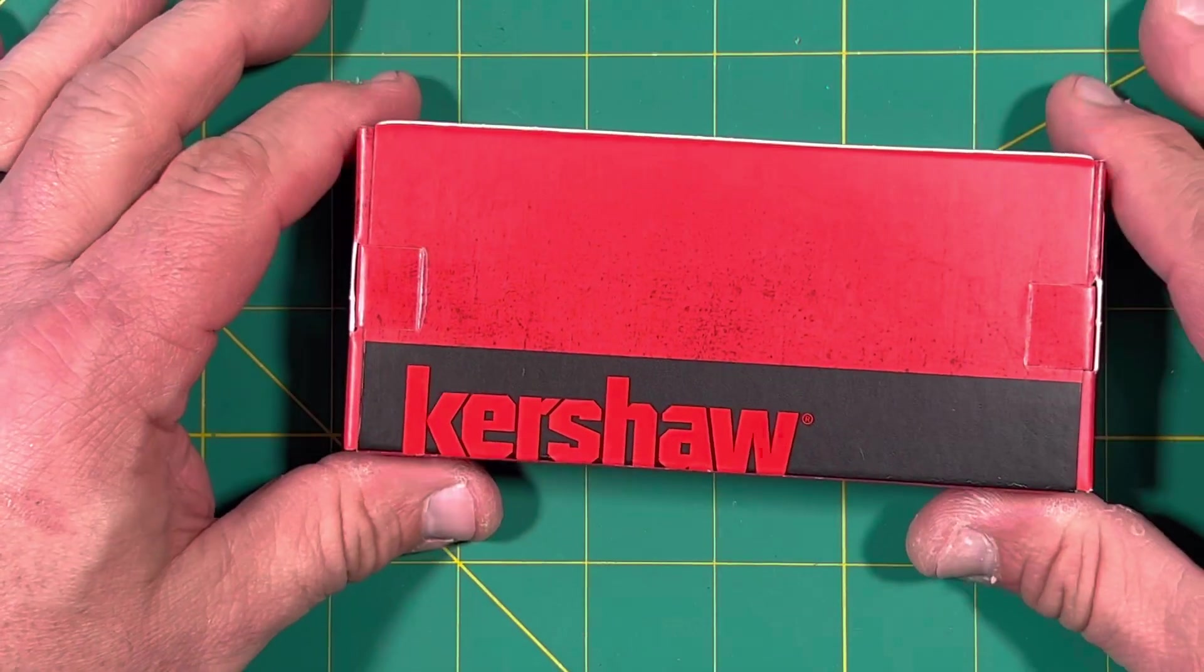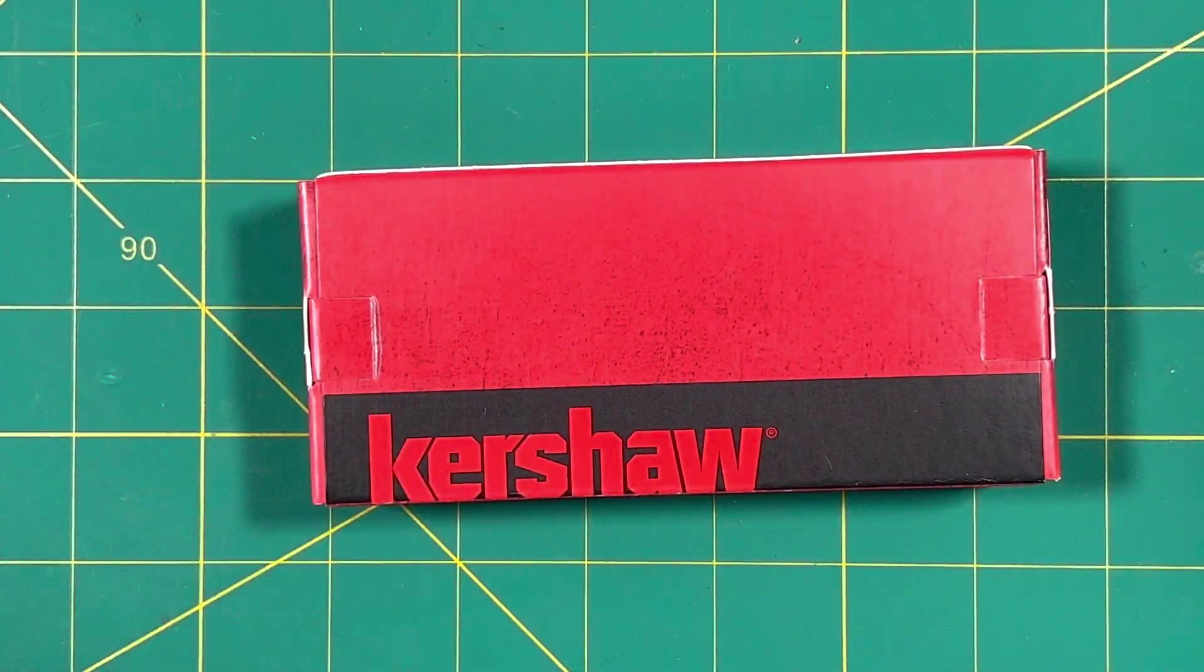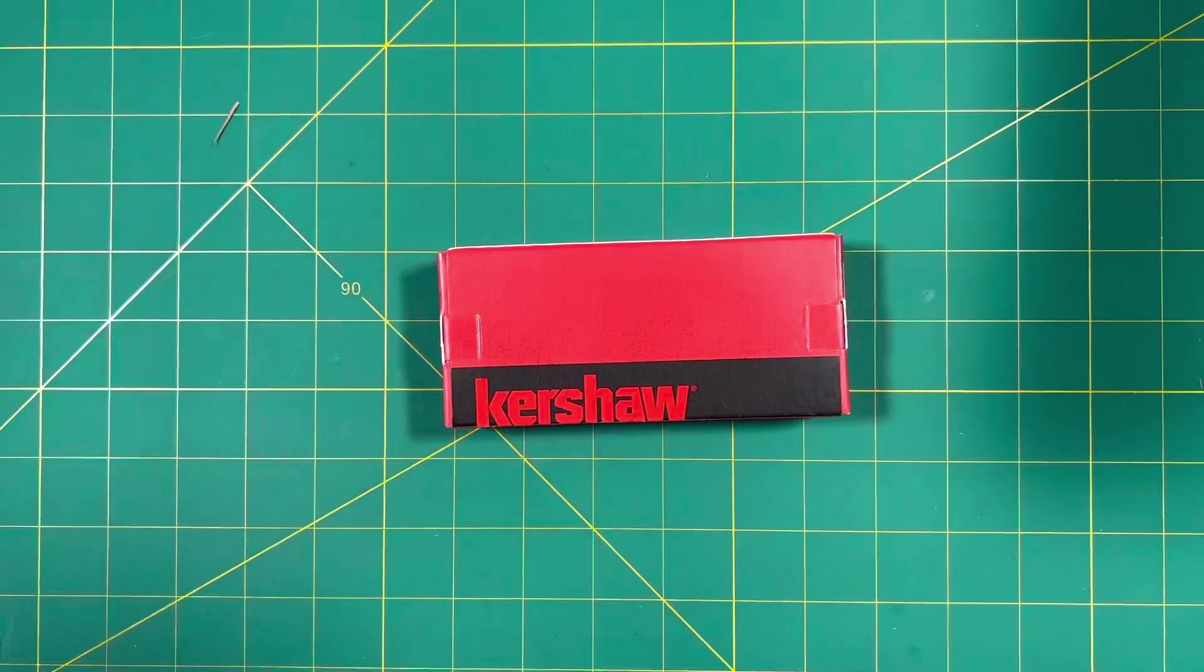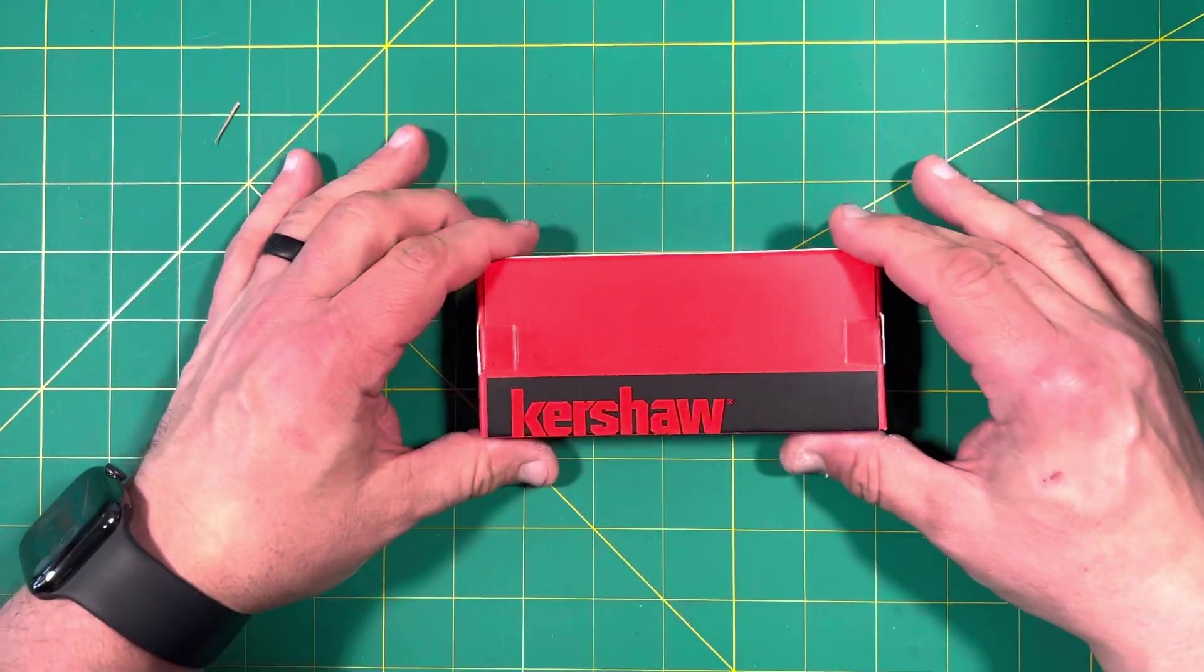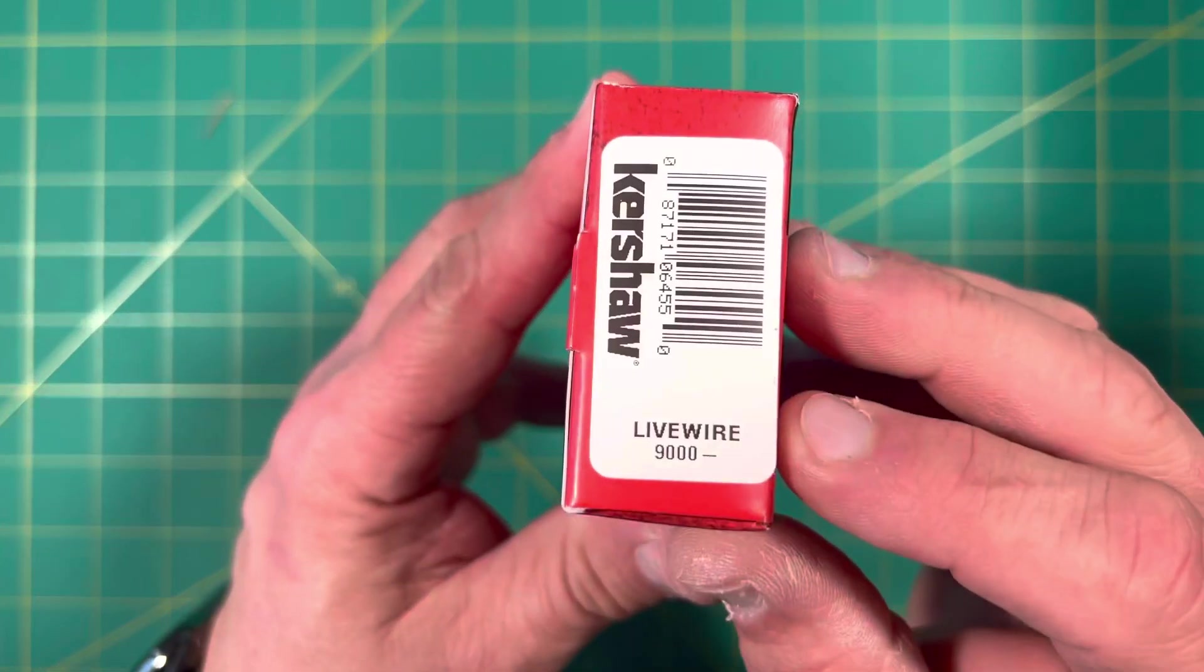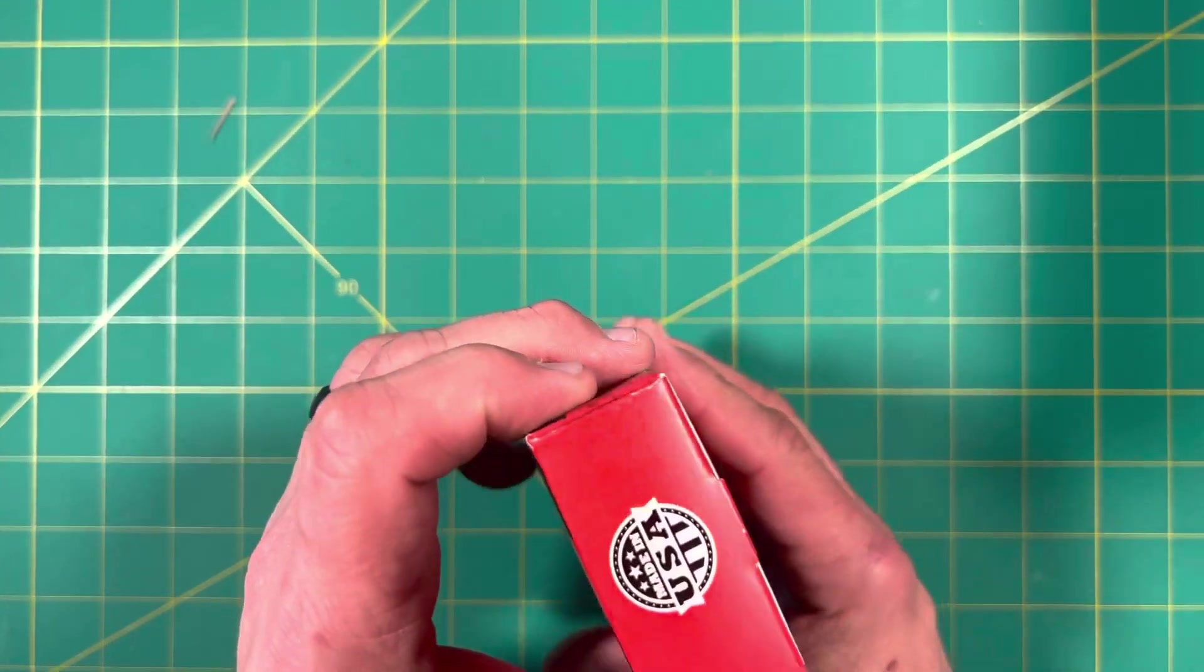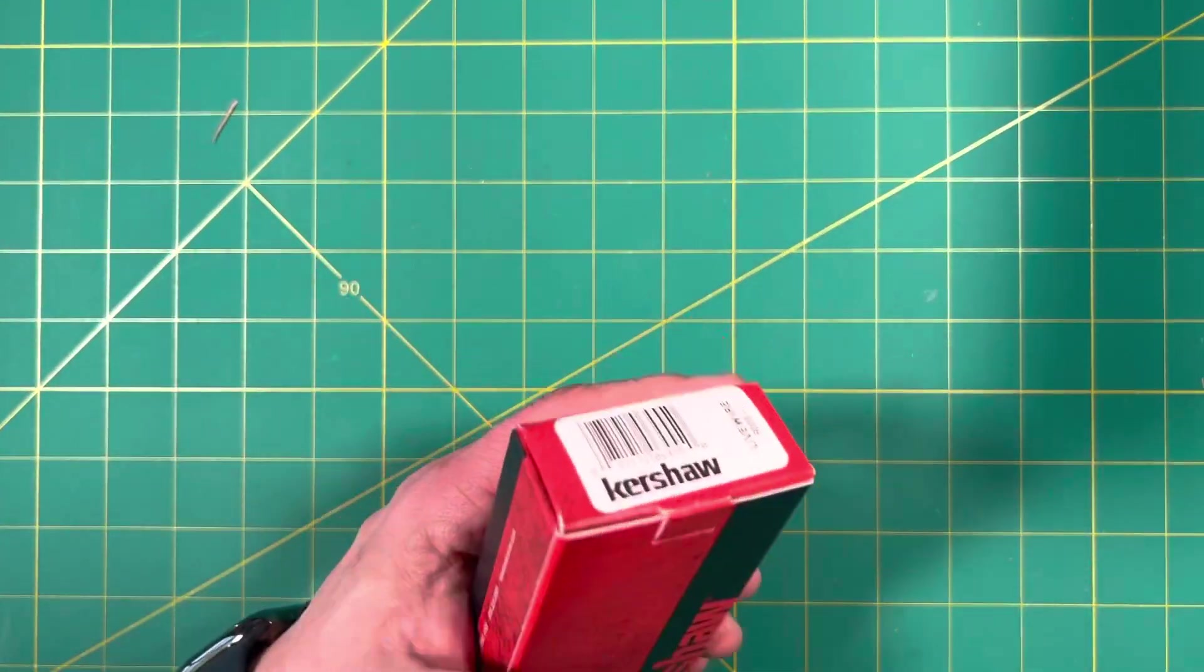Alright, so what we have here is a Kershaw. I don't know if you can see that. I think I zoomed in a little bit, so let me zoom back out here. Sorry about that. So this is the Kershaw, and this is the Livewire. Now, this is USA made, so let's take a quick look at this.